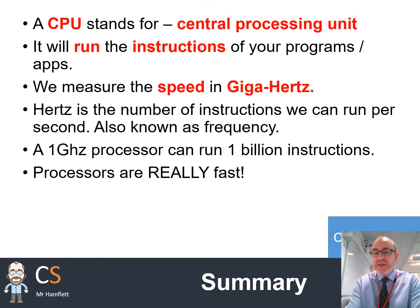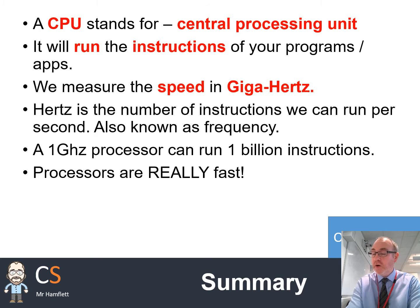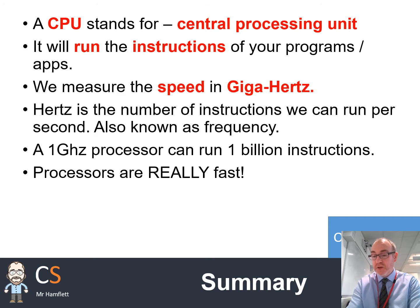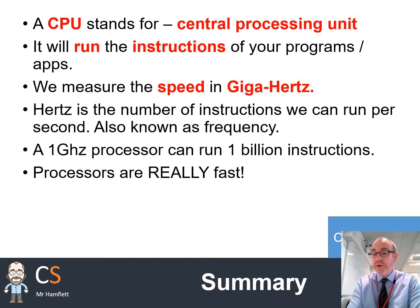When we talk about processing, we really mean running instructions. The device that runs your instructions inside the computer is known as a CPU, or Central Processing Unit. It will make sure your instructions are run. When you run a program — like Word, or a game on your mobile phone, or any app whatsoever — it's the CPU that's making use of those instructions, running through them one by one. We measure the speed of the CPU in hertz, or more likely gigahertz. A hertz is frequency — it's the number of instructions the CPU can run per second. A one gigahertz processor — essentially one billion hertz — can run one billion instructions per second. That's really fast, and modern-day CPUs run even faster.